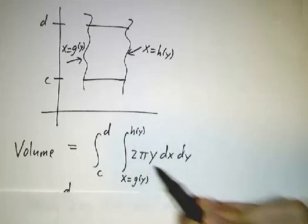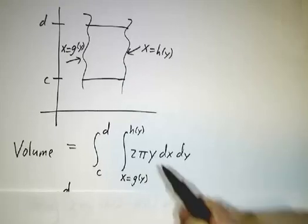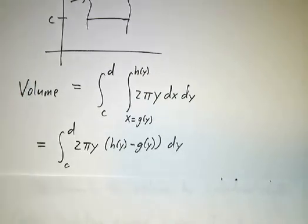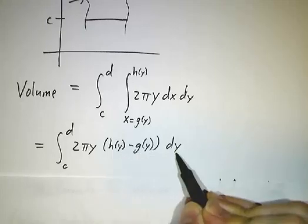Well, now integrating dx just gives you x because y is a constant. So that gives you 2πy (h(y) minus g(y)) dy.